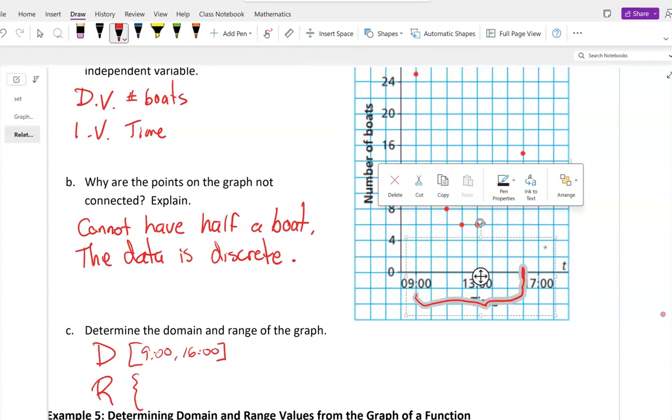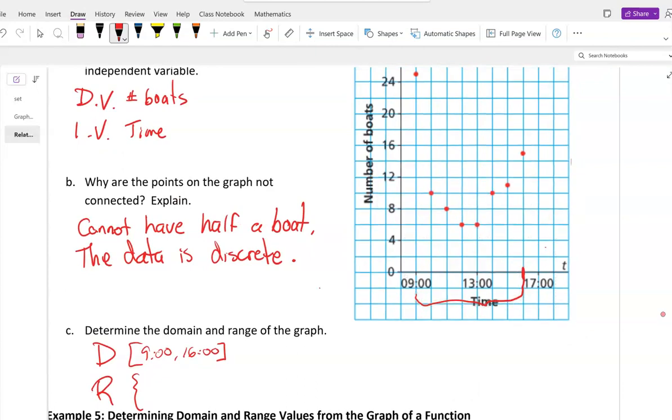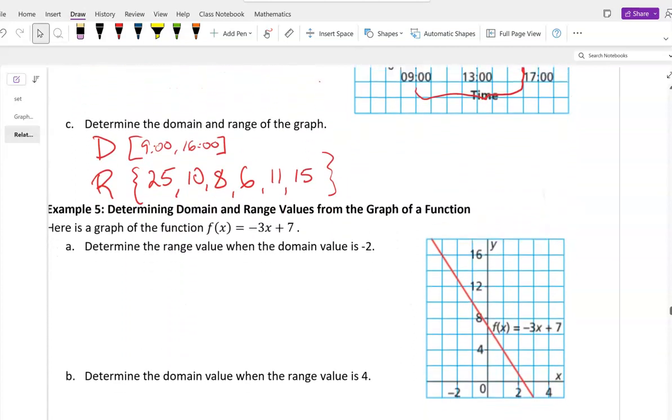What are the values? Looks like 25, 10, 8, 6, 6 happens twice, 10 happens again, 11, and 15.